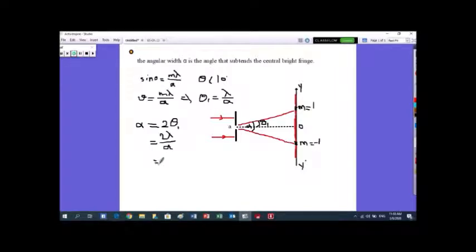The angular width alpha, you see here angle alpha is double angle theta, so alpha is 2 times theta 1, which means alpha equal to 2 lambda over A. By substitution, if you substitute the numbers, then you get alpha equal to 0.0053 radian, which is very small. That's the part A.